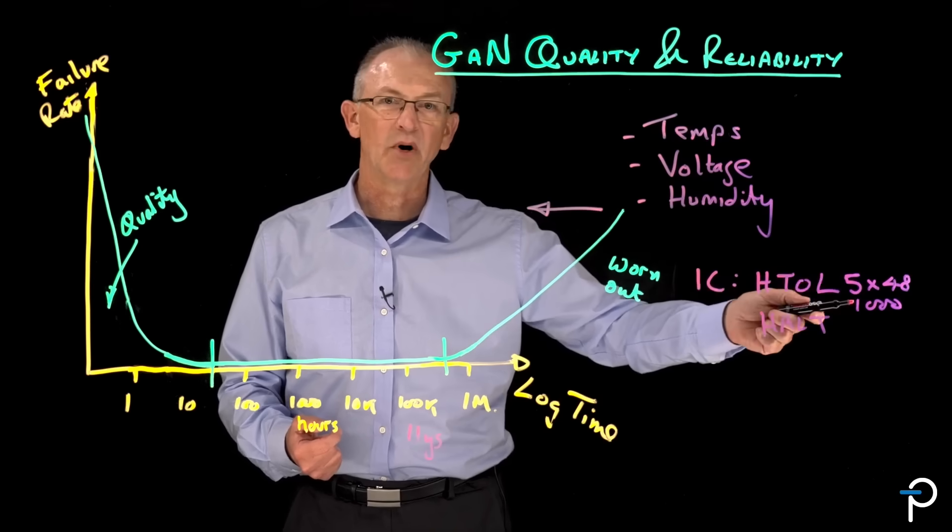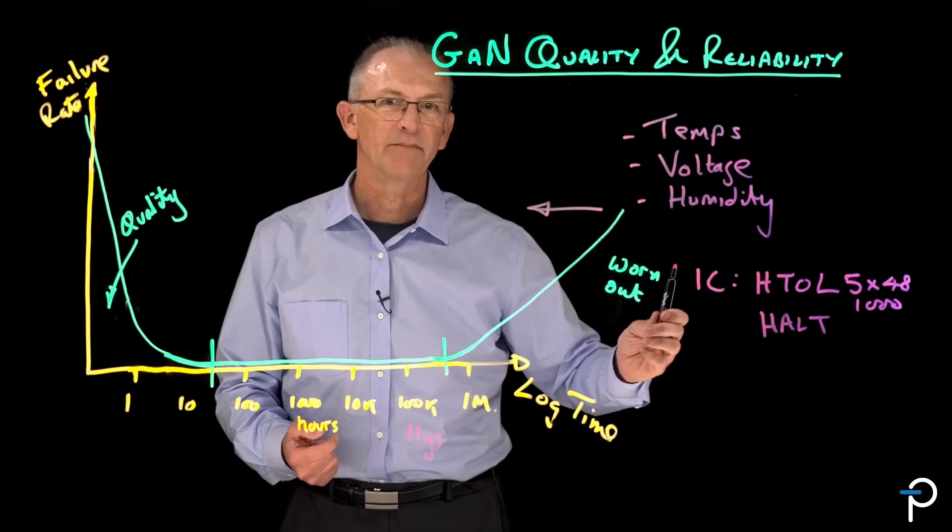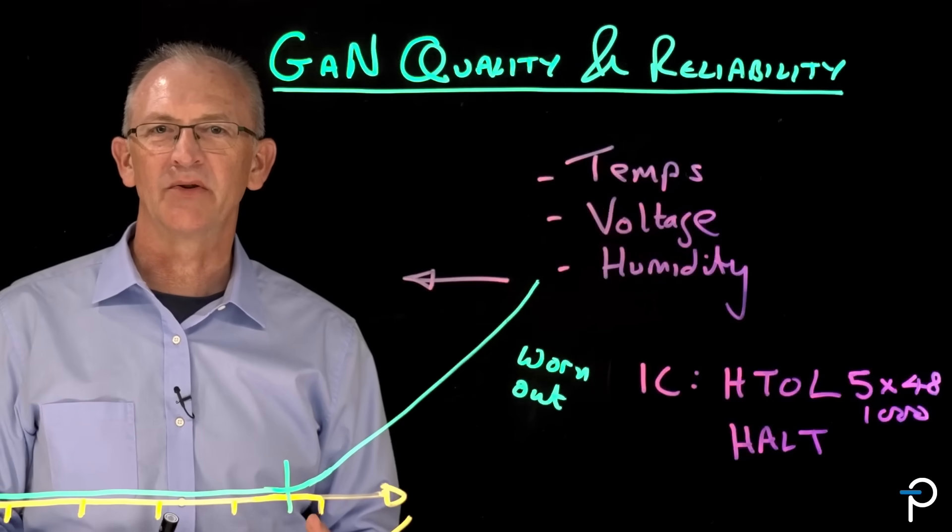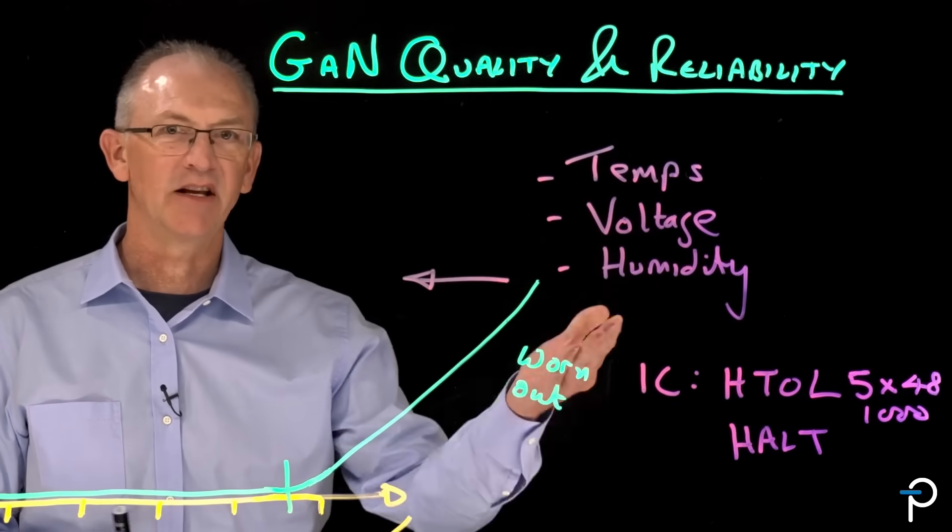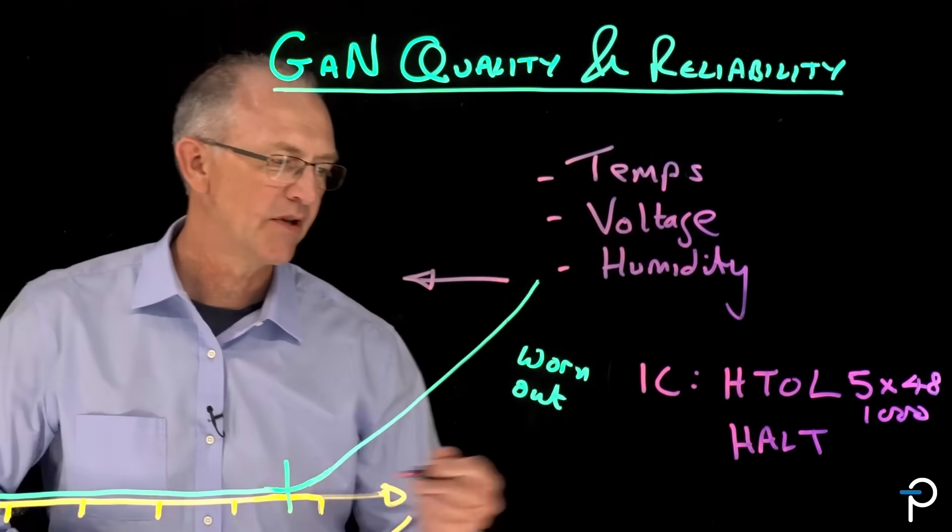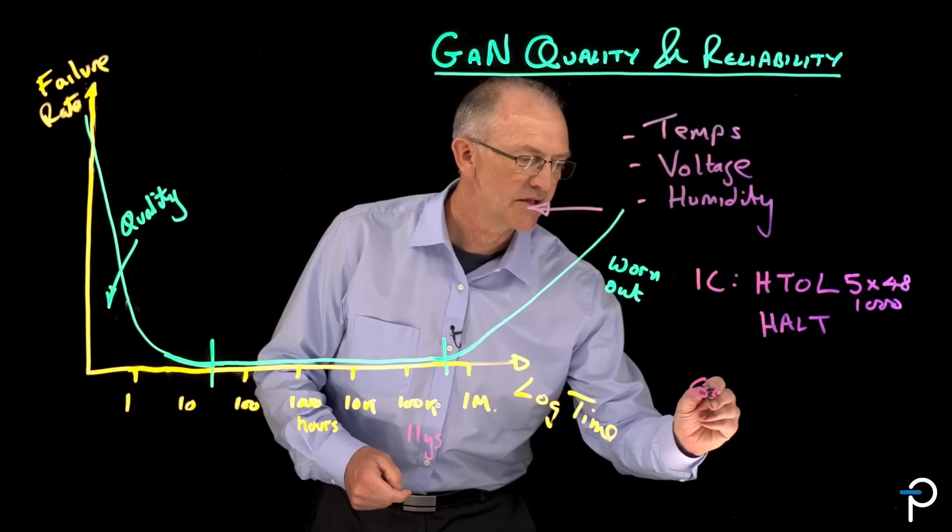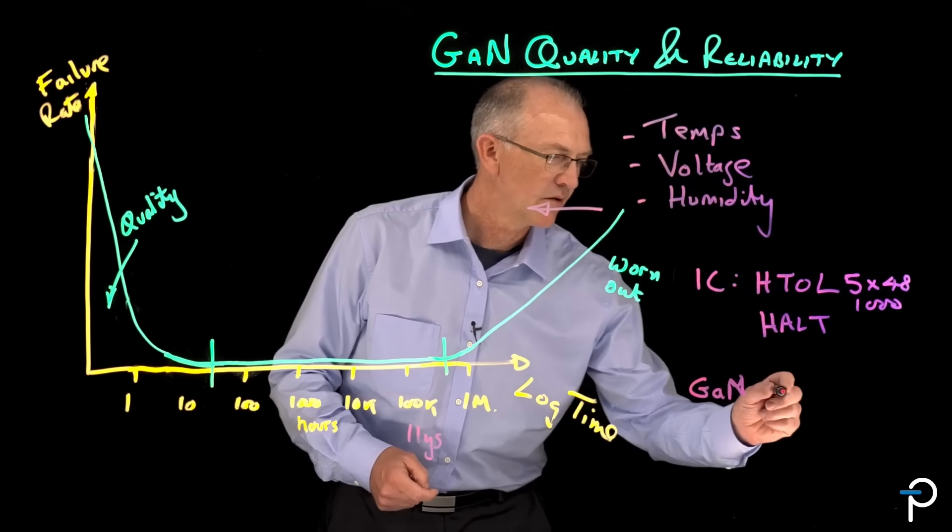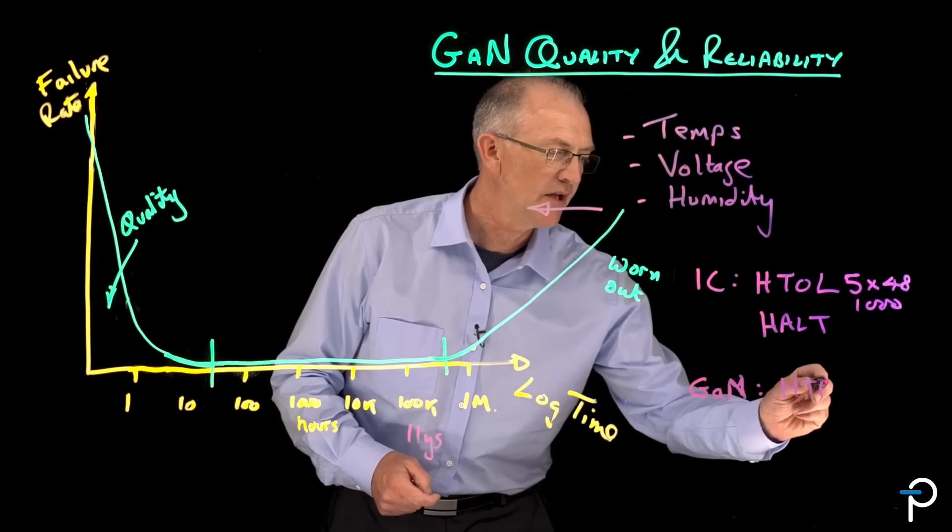But GaN is a new technology, and so we want to be doubly sure that the device inside the IC is robust and long-lived. So we do tests specifically designed for the GaN. One of those is HTRB.